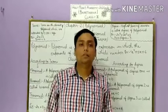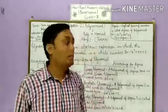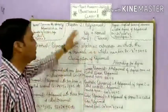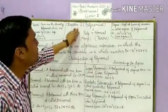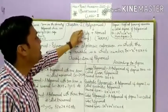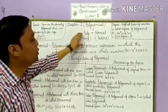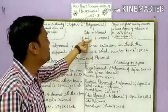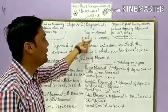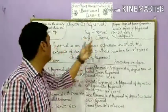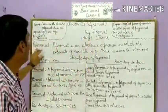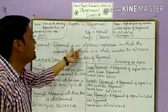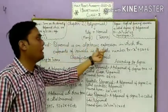I am Ashin Gupta from Holy Pointing, and today we will discuss about the polynomial. Polynomial is a combination of two words: poly plus nominal, which means poly means many and nominal means terms.